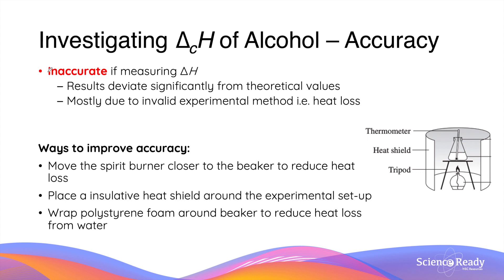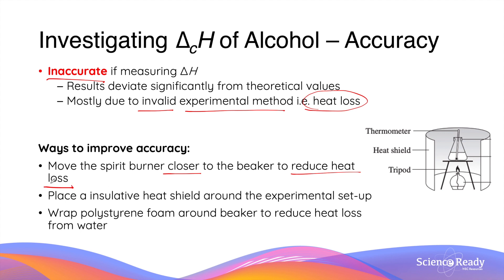In terms of accuracy, most experiments will be inaccurate, predominantly because most heat produced by the burner is lost to the surroundings. There are a few ways to improve accuracy: move the spirit burner closer to the beaker to reduce heat loss over distance, or place an insulative heat shield around the setup — such as shown in the diagram — to prevent heat from being lost to the surroundings.